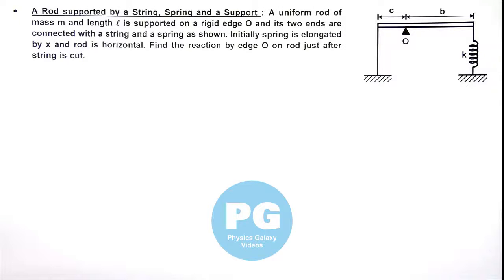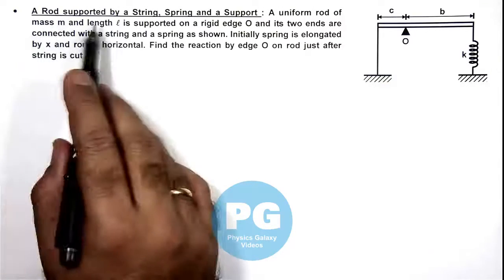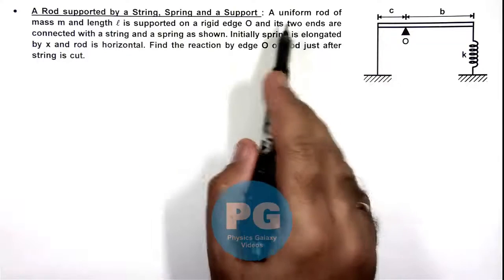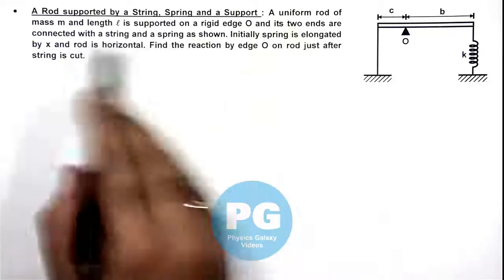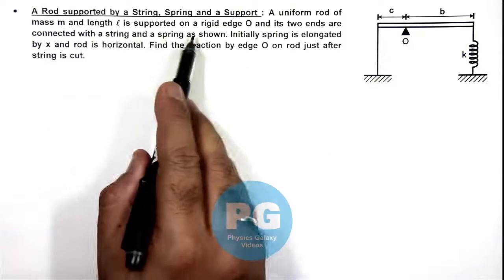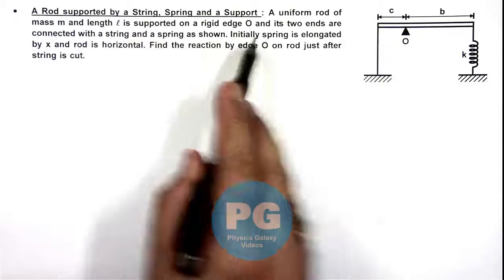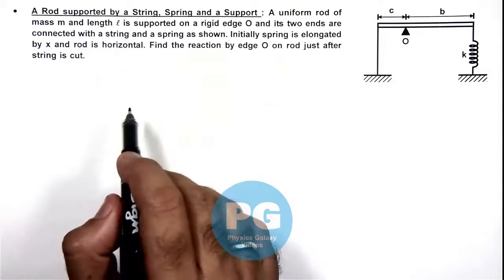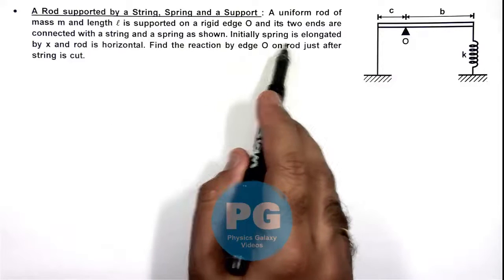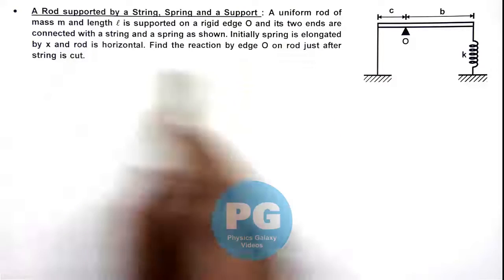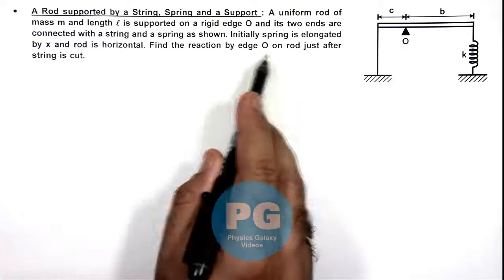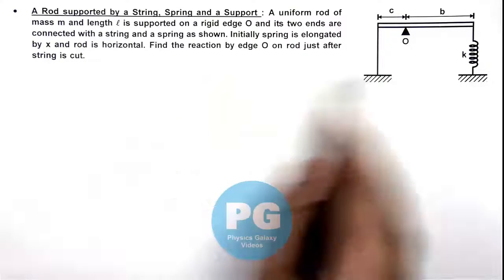In this illustration we'll discuss a rod supported by a string, spring and a support. Here we are given that a uniform rod of mass m and length l is supported on a rigid edge O, and its two ends are connected with a string and a spring as shown. Initially spring is elongated by x and the rod is horizontal. We are required to find the reaction by edge O on rod just after the string is cut.